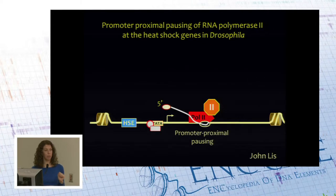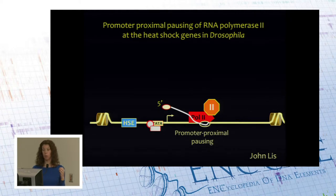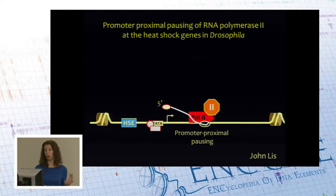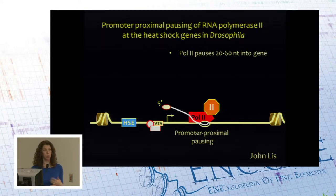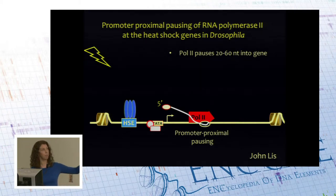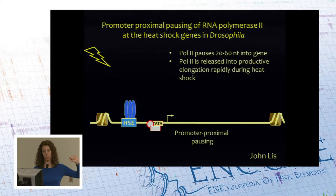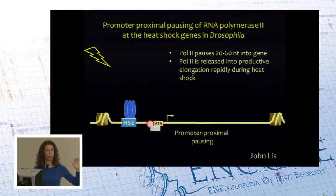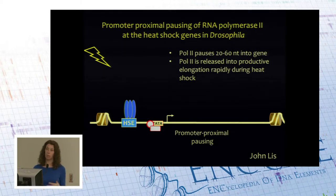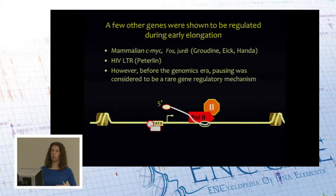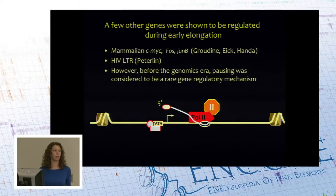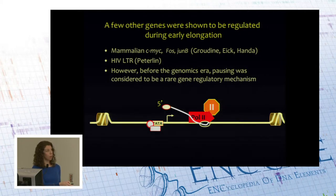The example I want to give derives from studies by John Liss. For many years he studied a couple of genes in the fly and discovered a phenomenon called promoter-proximal pausing, where the polymerase would transcribe a short RNA and then sit in the promoter-proximal region waiting for a signal — in this case heat shock — to release the pause and let the polymerase proceed rapidly into the gene. Before we could do unbiased data collection, we had no idea how broad this fundamental biological process really was.